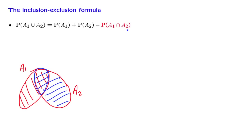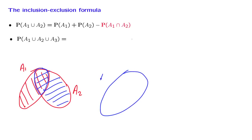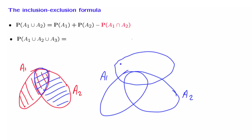Can we generalize this thinking to the case of three events? Suppose that we have three events, a1, a2, and a3, and we want to calculate the probability of their union.